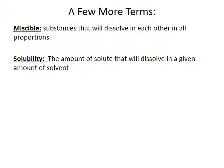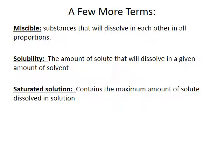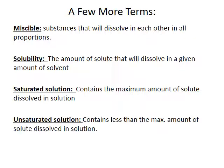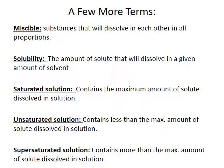Solubility refers to the amount of solute that will dissolve in a given amount of solvent. In a saturated solution, we have dissolved the maximum amount of solute in our solvent at a given temperature — no more solute can dissolve. An unsaturated solution can dissolve more solute because it contains less than the maximum amount. Finally, a supersaturated solution contains more than the maximum amount of solute. This type of solution is formed under special conditions and is generally unstable — normally the excess solute will precipitate out.